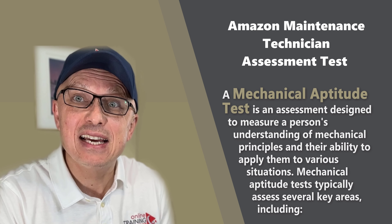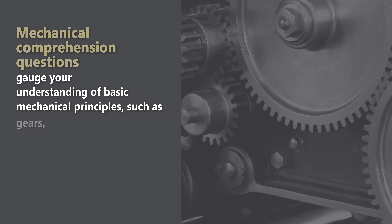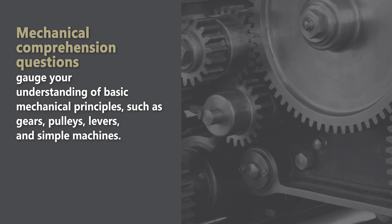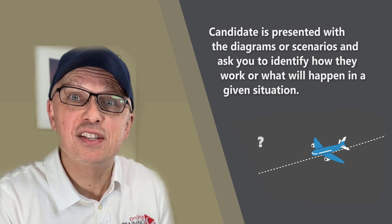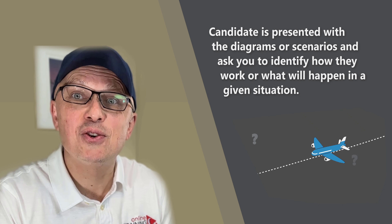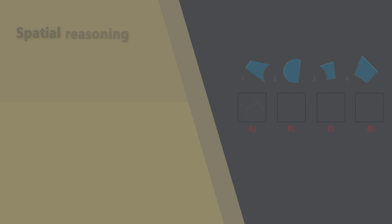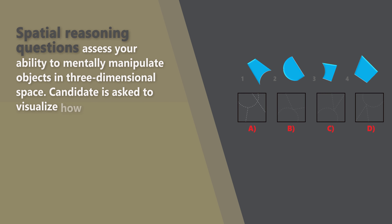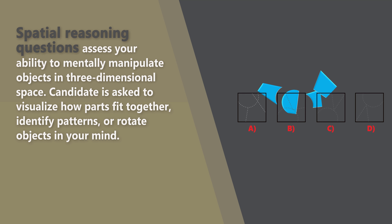Mechanical aptitude tests typically assess several key areas. One area is mechanical comprehension questions, which gauge your understanding of basic mechanical principles such as gears, pulleys, levers, and simple machines. Candidates are presented with diagrams or scenarios and asked to identify how they work or what will happen in a given situation. Spatial reasoning questions assess your ability to mentally manipulate objects in three-dimensional space.